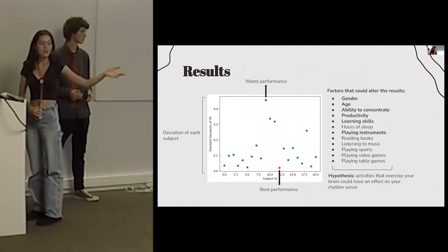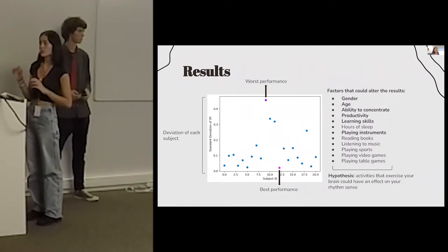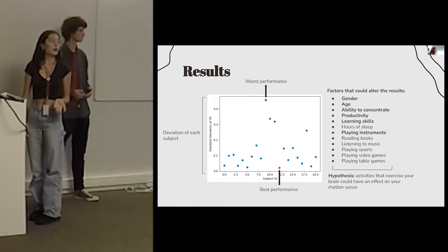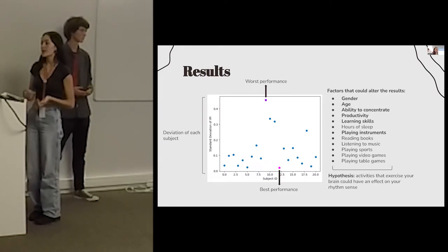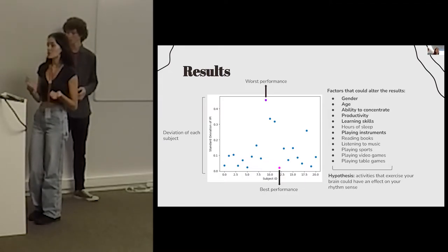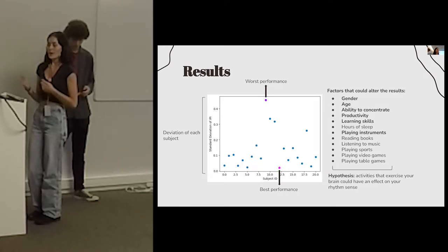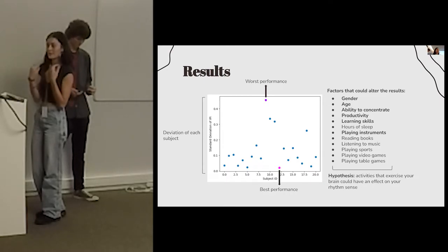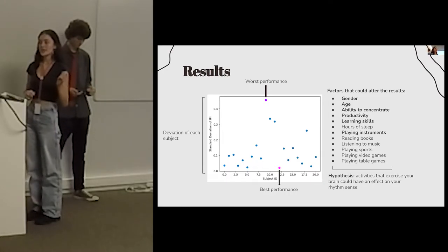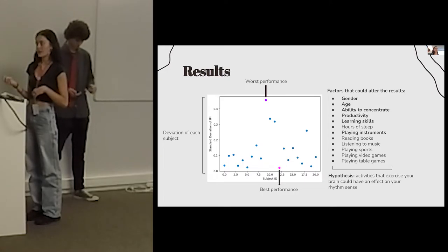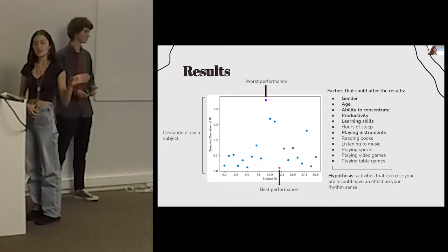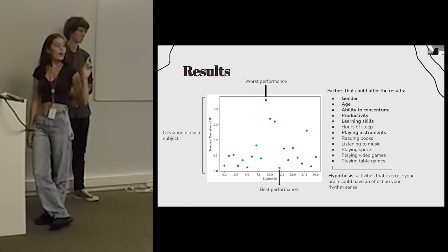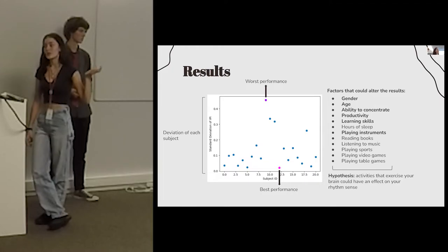We created a survey with questions regarding possible influencing factors, because we thought people who stay in sync might do certain exercises that train their brain and make it easier to stay on beat. The factors we found most interesting for data analysis were gender, age, ability to concentrate, productivity, learning skills, and whether they played instruments or not.